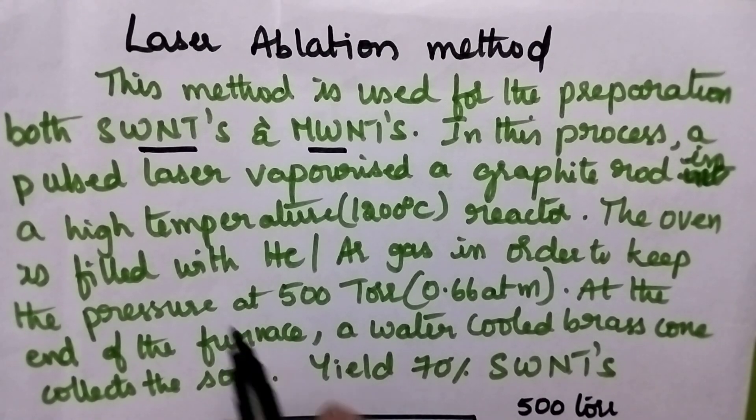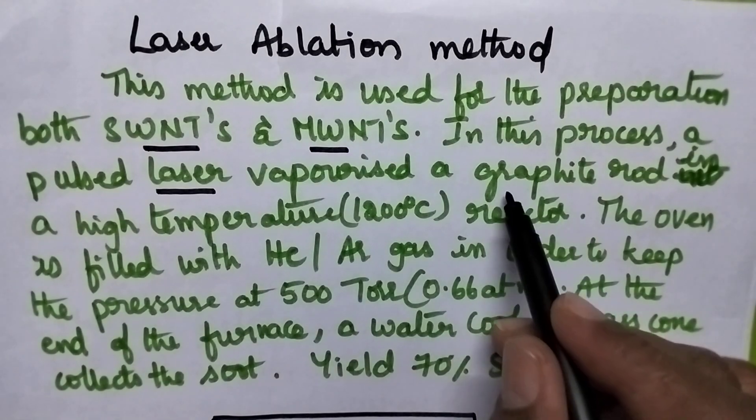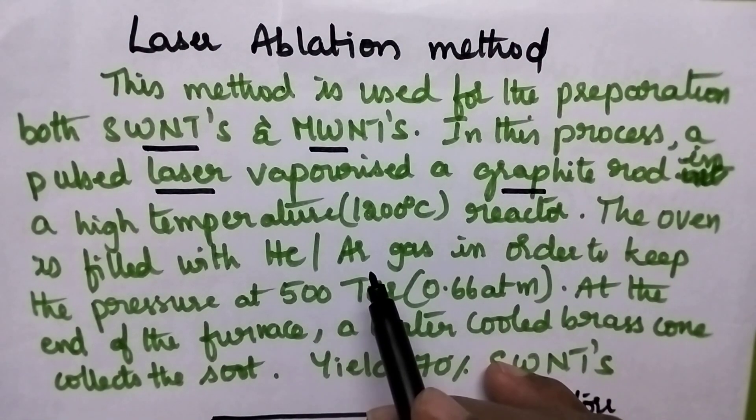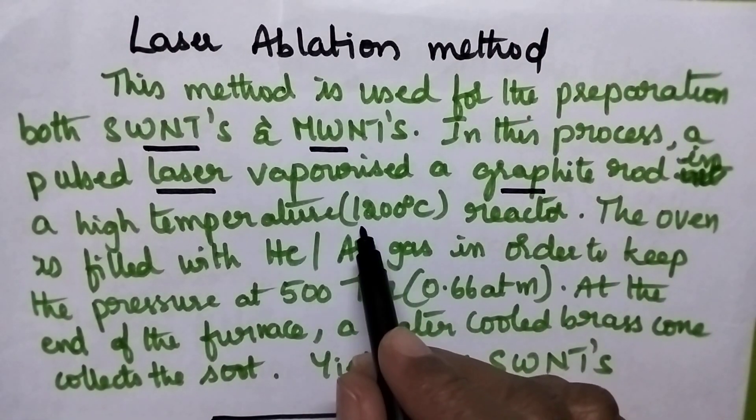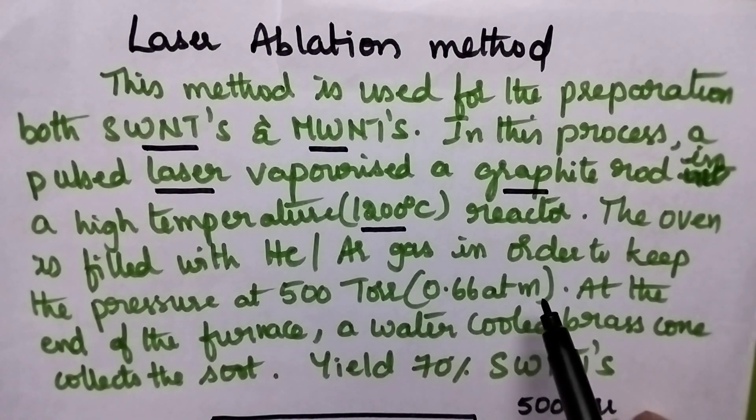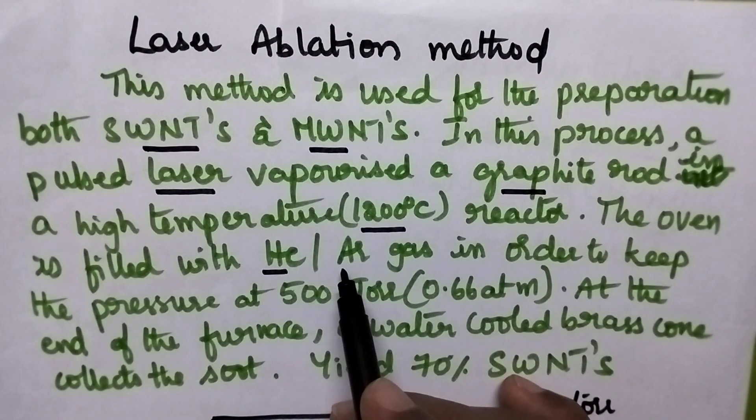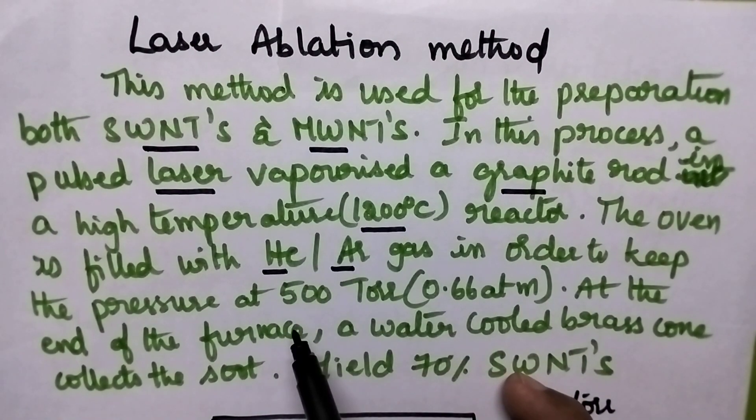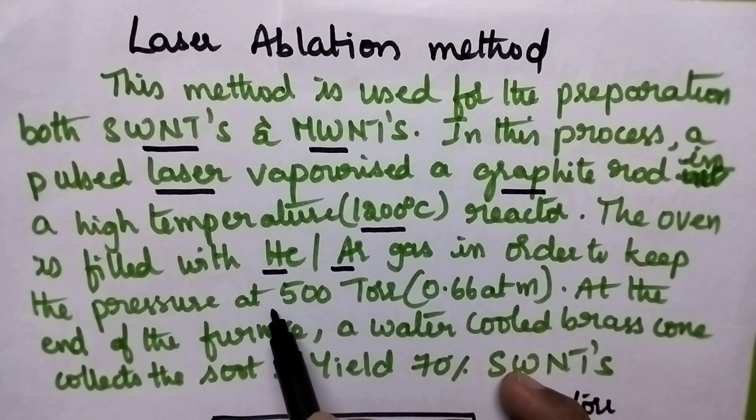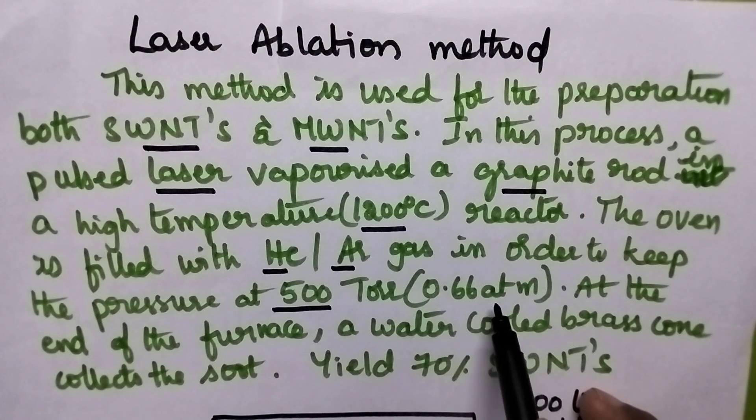In this process, a laser beam is used to vaporize the graphite rod which is maintained at very high temperature, that is 1200 degrees Celsius, in a furnace. The furnace is filled with inert gases like helium or argon and maintained at very low pressure, that is 500 torr or 0.66 atm.